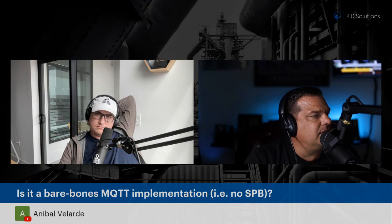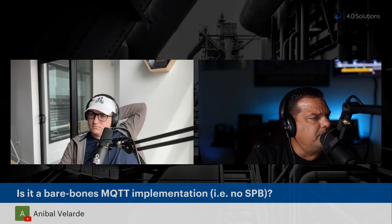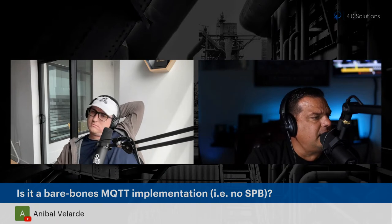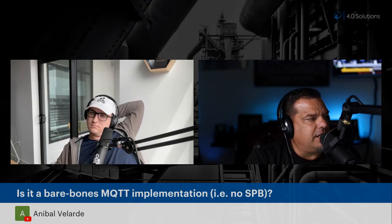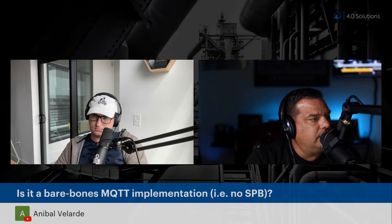To answer Annabelle Velarde's question: no, it is not a bare-bones MQTT implementation — it is Sparkplug B. All data from each individual rig is over Sparkplug B. Each node in the namespace is a Sparkplug B node from each individual rig. A water reclaimer rig and a water rig used in tandem as a pair are actually each their own individual nodes, but there's only one industrial PC serving both rigs.